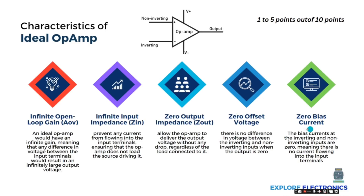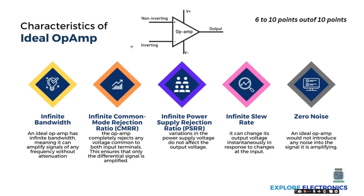Then, zero bias current. This means the bias currents at the inverting and non-inverting inputs will be zero — no current will flow into the input terminals of the op-amp.